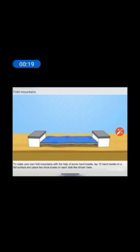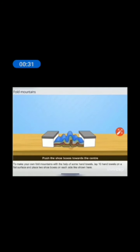To make your own fold mountains, with the help of some hand towels, lay 10 towels on a flat surface and place two shoe boxes on each side as shown. Push these shoe boxes towards the center. This activity shows us how fold mountains are formed when the forces move towards a common center.